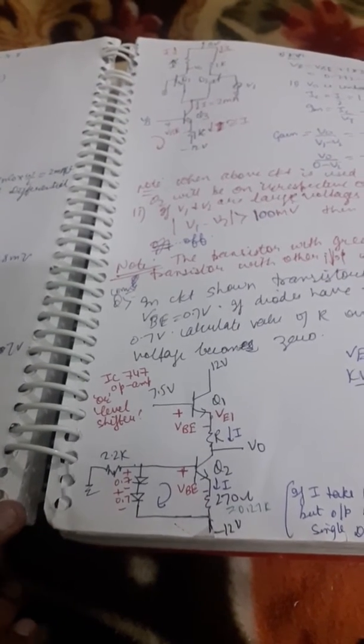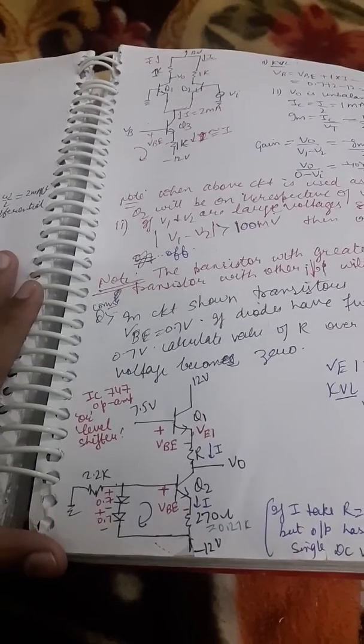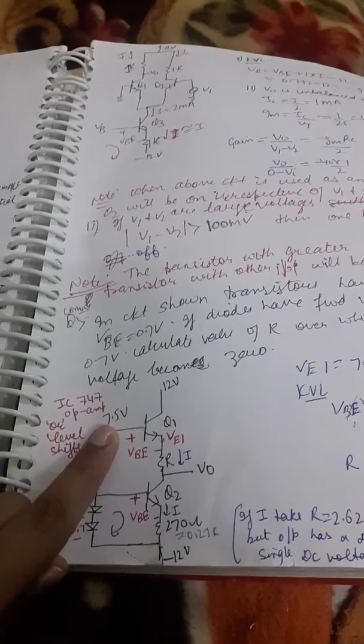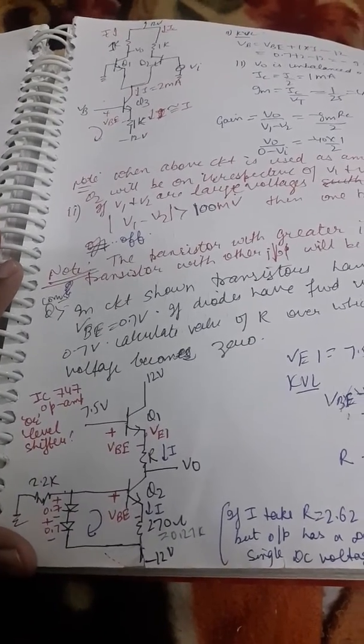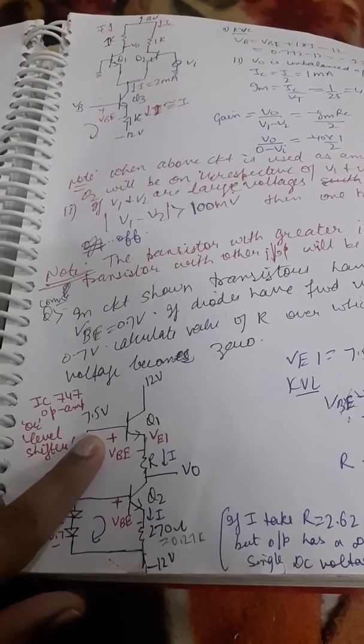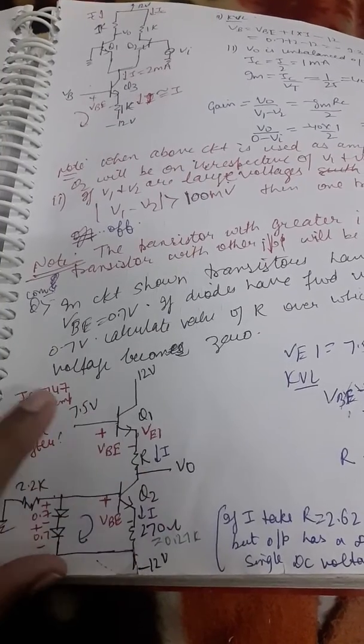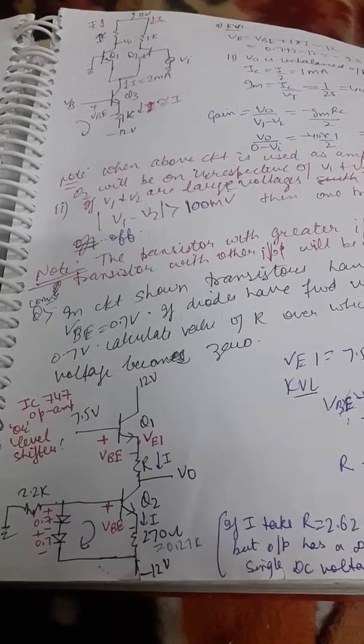Hello friends, today we are going to discuss level shifter. What is a level shifter? It is an IC 747, an op-amp IC. What we are doing here is a common collector configuration. Basically, as you can see, the input here is at base terminal and output will be given at the output terminal. Here we are giving a base input which is DC only, so this is common collector configuration.